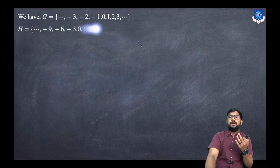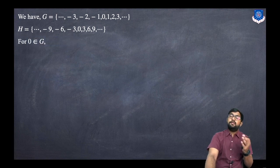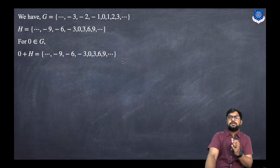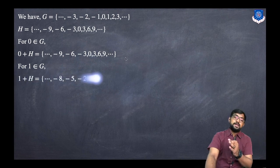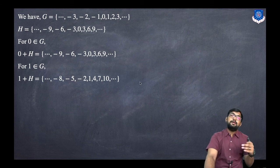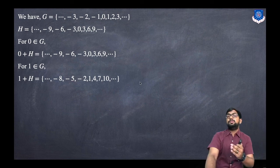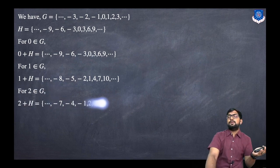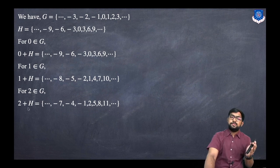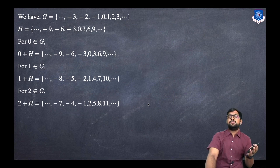For left cosets: 0+H is the same as H. 1+H = {…, -8, -5, -2, 1, 4, 7, …}, and 2+H = {…, -7, -4, -1, 2, 5, 8, …}. The left and right cosets give the same answers, so we can conclude it is an abelian group.